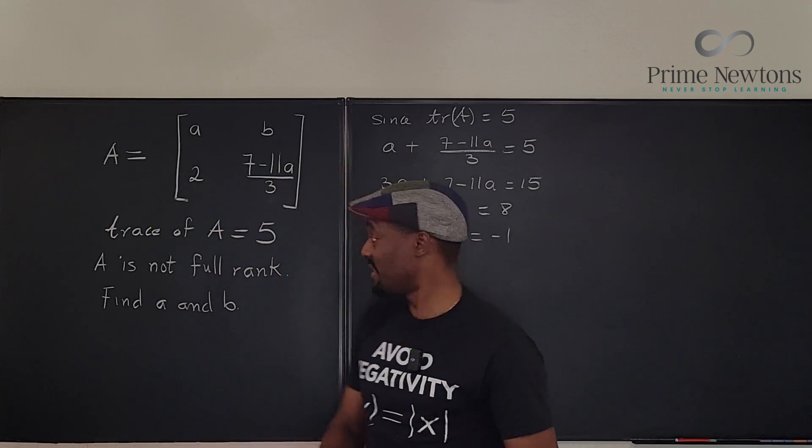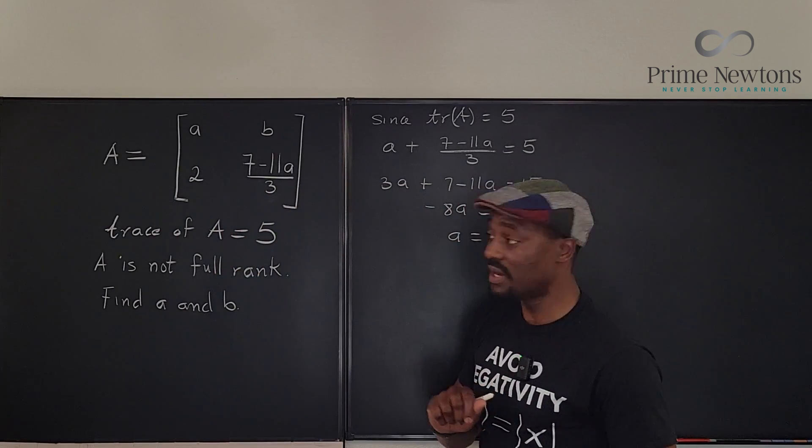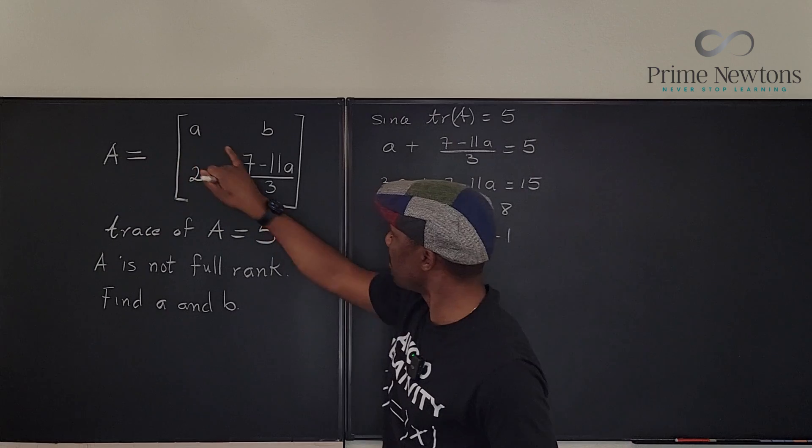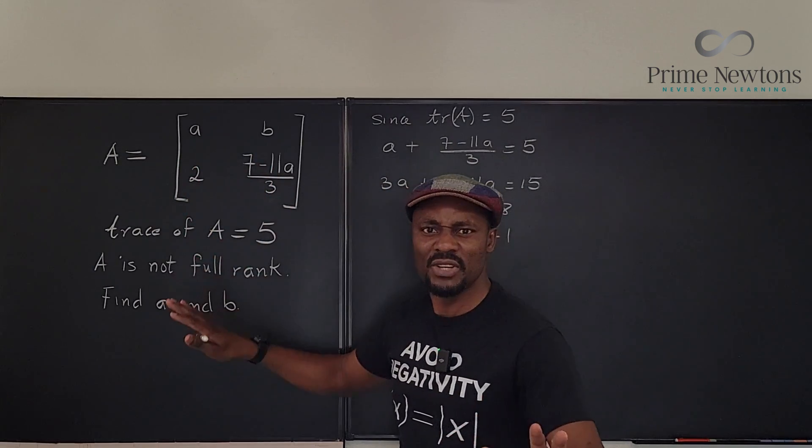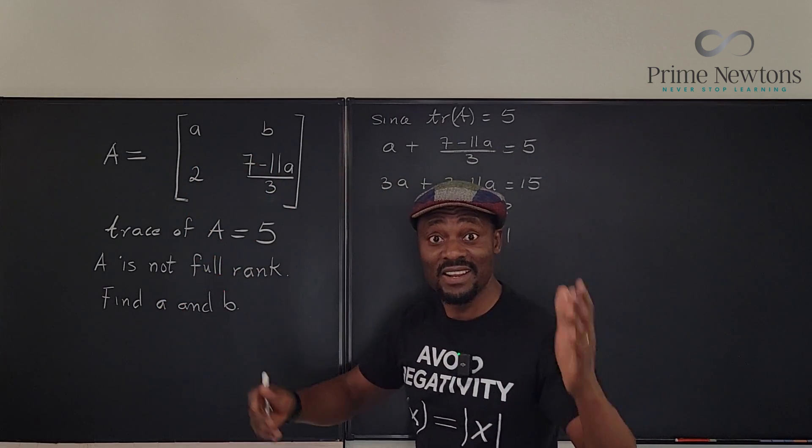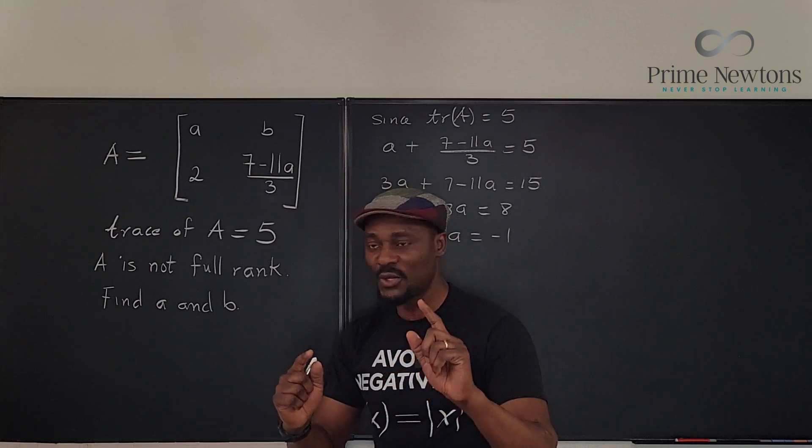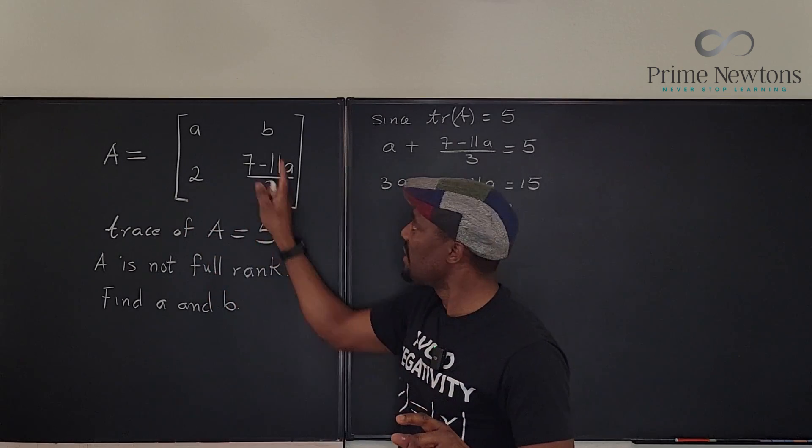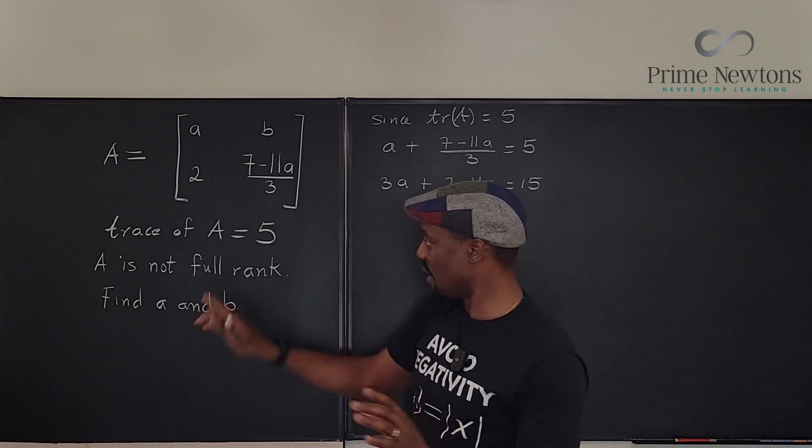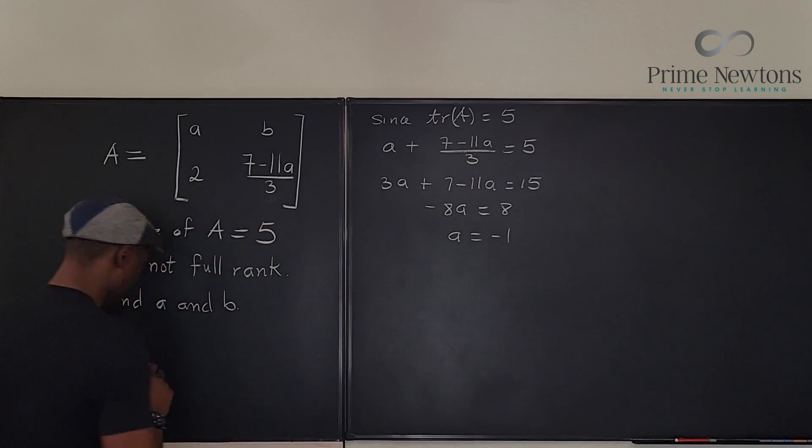So there are two ways you can go about this having gotten your a to be minus one. Go back and plug in a here and plug in a here and see what the matrix looks like. And then use the idea that the columns are not linearly independent to guess what did I do to two to get the number here? That's what I'm going to do to a to get the number here. So you can go back to the matrix. Let's go back here. So this is the solved matrix.